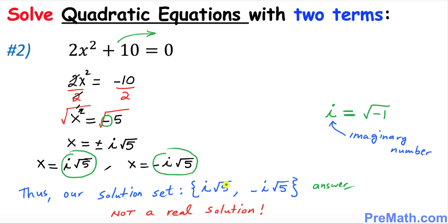Our solution set is i times square root of 5 and negative i times square root of 5. And that is our answer. As you can see, our answers involve the imaginary number i, so we have no real solutions. Thanks for watching and please subscribe to my channel for more exciting videos.